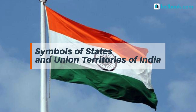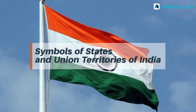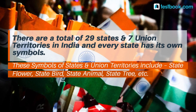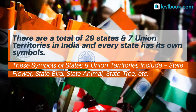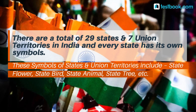Hello friends and welcome to this video. Today we will talk about the symbols of states and union territories of India. There are a total of 29 states and 7 union territories in India and every state has its own symbols. Today we will talk about the symbols of states and union territories which include state flower, state bird, state animal and state tree.